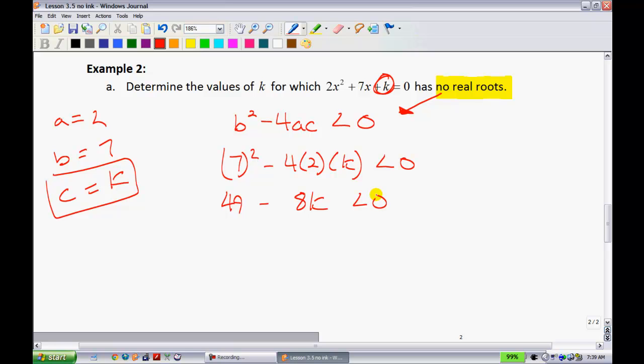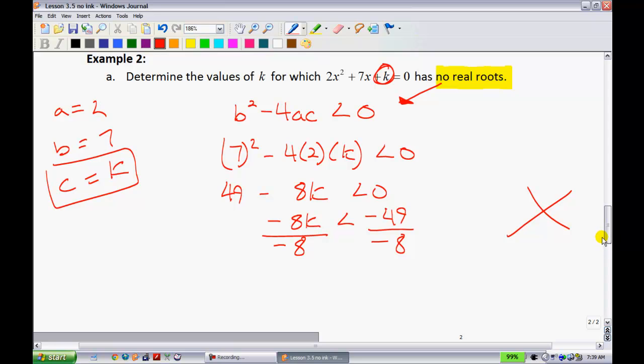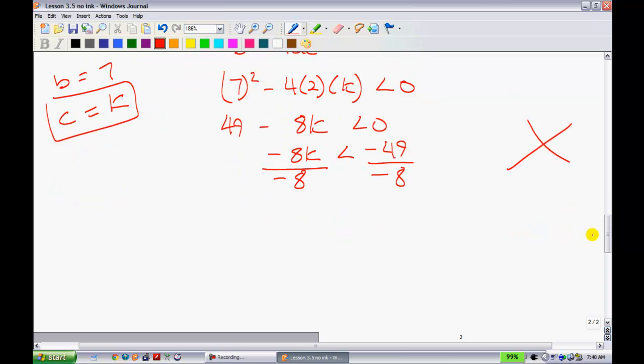Now, I'm going to solve for my variable, solve for k. Move the 49 to the other side of the equation. We have negative 8k is less than negative 49. Keep in mind here that when we divide by a negative 8 here, something funky happens. Whenever you divide by a negative, and we have inequalities like less than or greater than, the inequality is going to switch. So this is going to end up being k is now greater than 49 over 8.